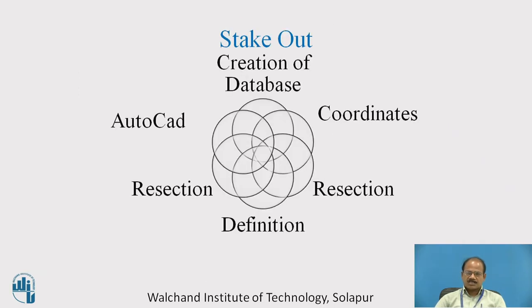In an earlier lecture we have already seen how the resection method works. In the stakeout method, we need to create a database. Stakeout is setting out points as per drawings created for construction of civil engineering works — for example, column centers, corners of walls, or the center of a structure such as a well. For all such important points that need to be fixed on the ground, stakeout is essential, and creation of a database from the drawing is of utmost importance.